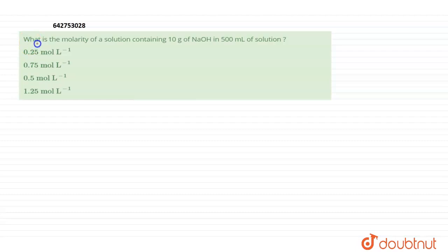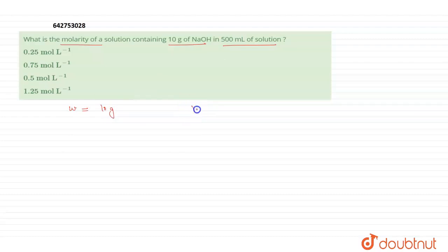The question asks: what is the molarity of a solution containing 10 grams of NaOH in 500 ml of solution? Here we are given the weight of solute, which is 10 grams, and the volume of solution is 500 ml. We have to find molarity, represented by capital M.